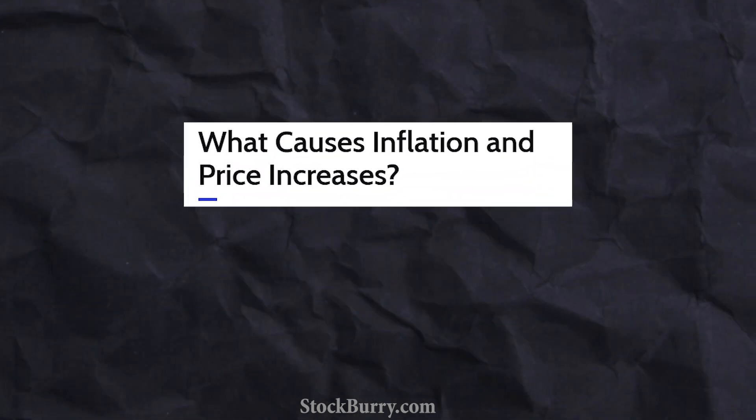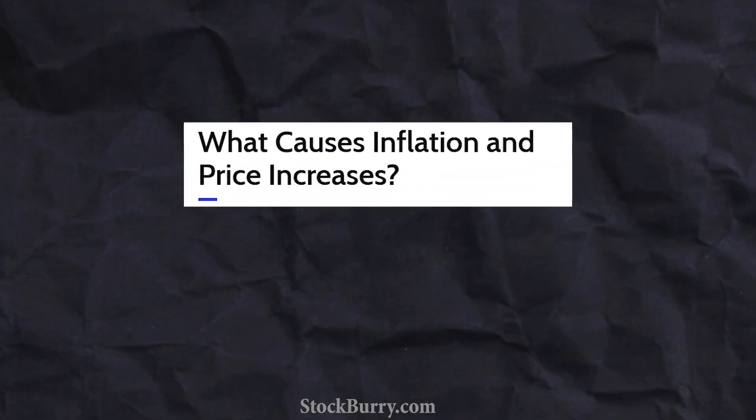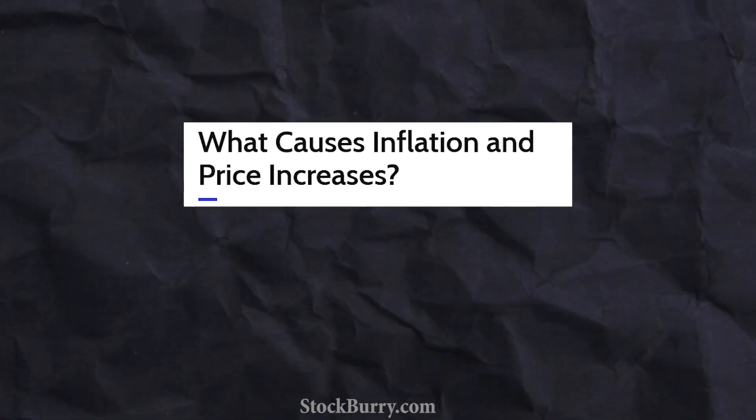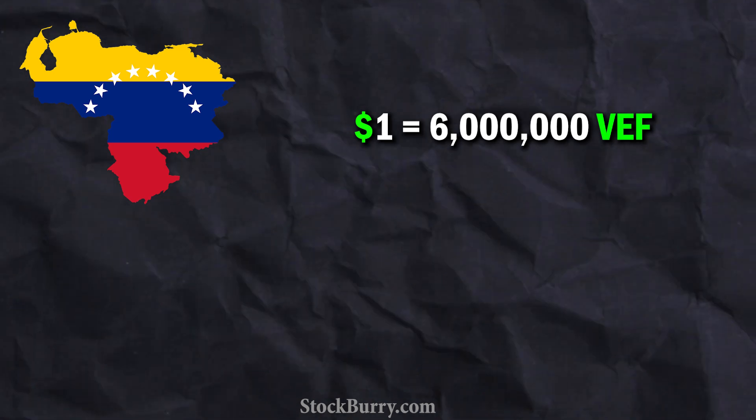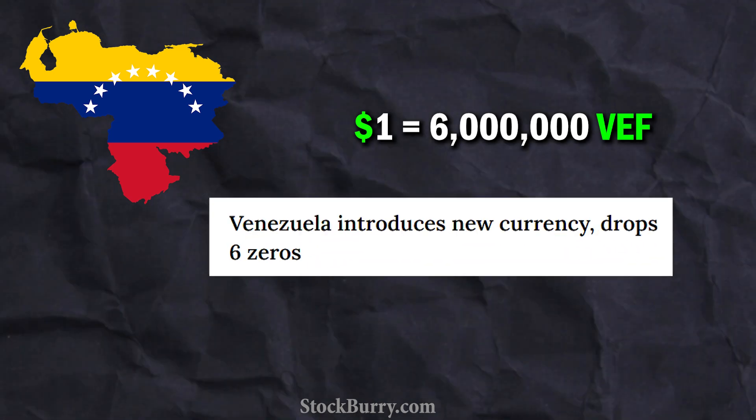There are many reasons for inflation, such as corruption, economic problems, and many countries just printing a lot of money. Venezuela's government's bad policies and unstable government made inflation sky-high in Venezuela. One dollar became equal to six million Venezuelan bolivars. After that, Venezuela changed their currency in 2018.